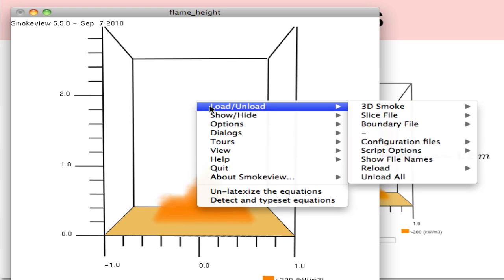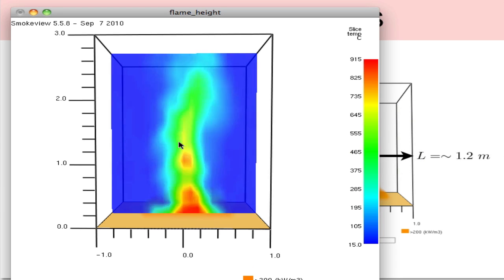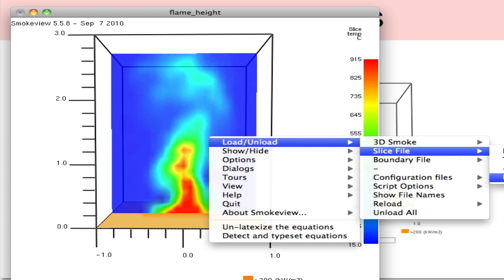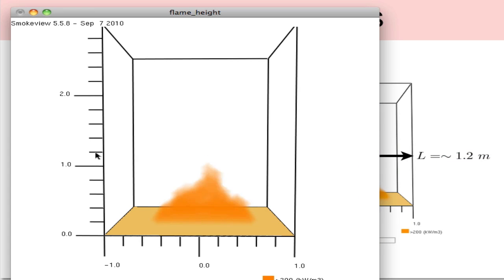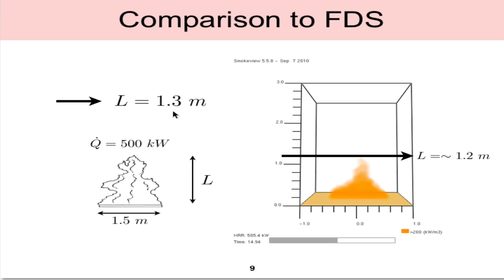Above here, if I turn on a slice file of the temperatures, we can see hot gases exist above the physical flame height, on the order of 400 to 500 degrees Celsius. That's defined as the plume region. So from the simulation, we can see that the flame height predicted is about 1 to 1.2 meters.